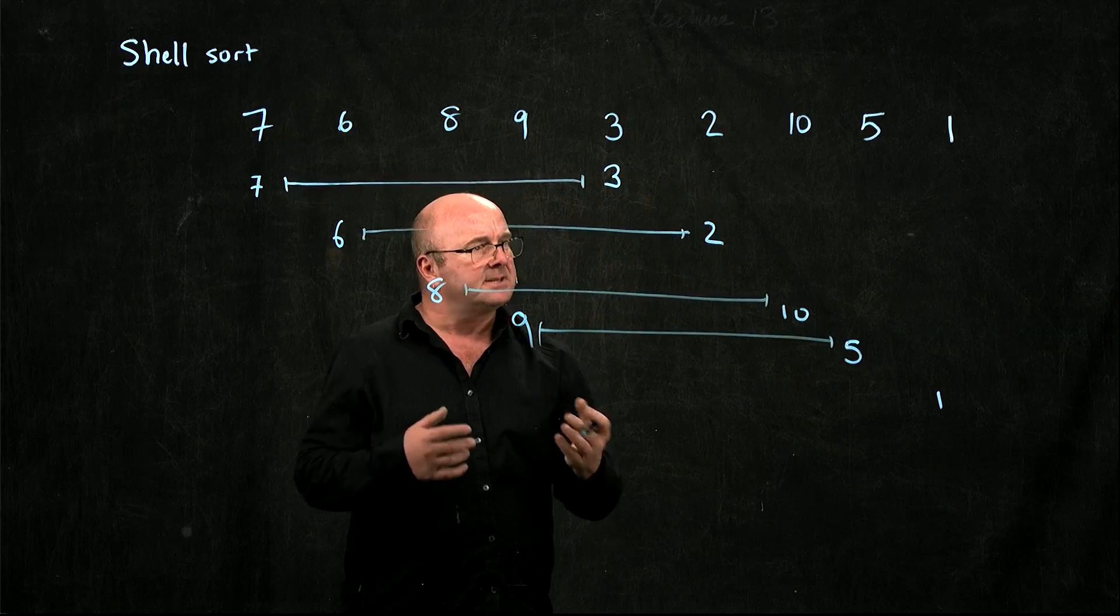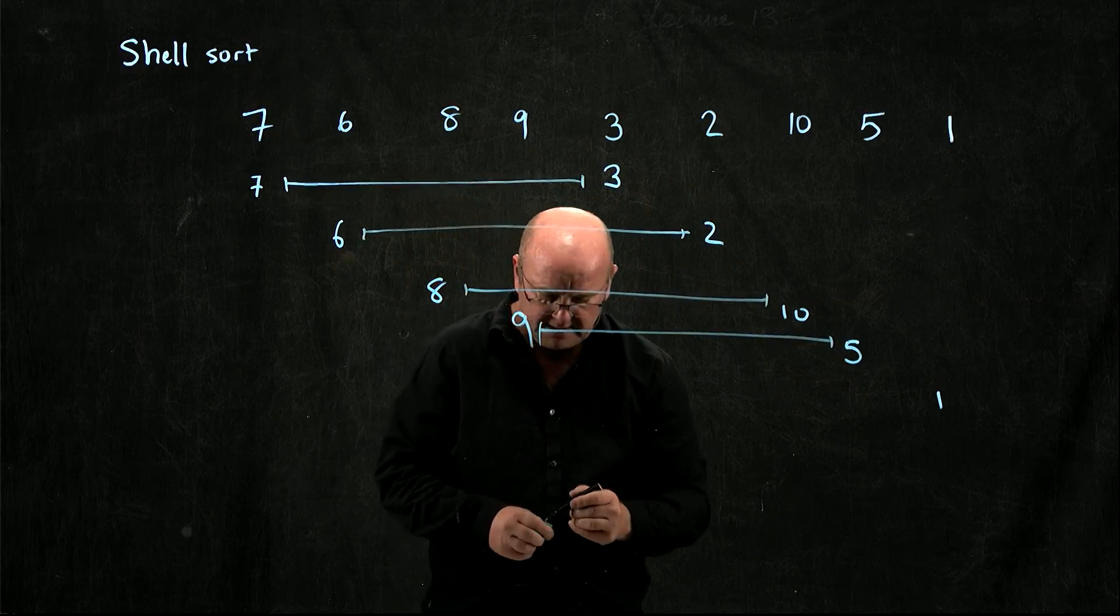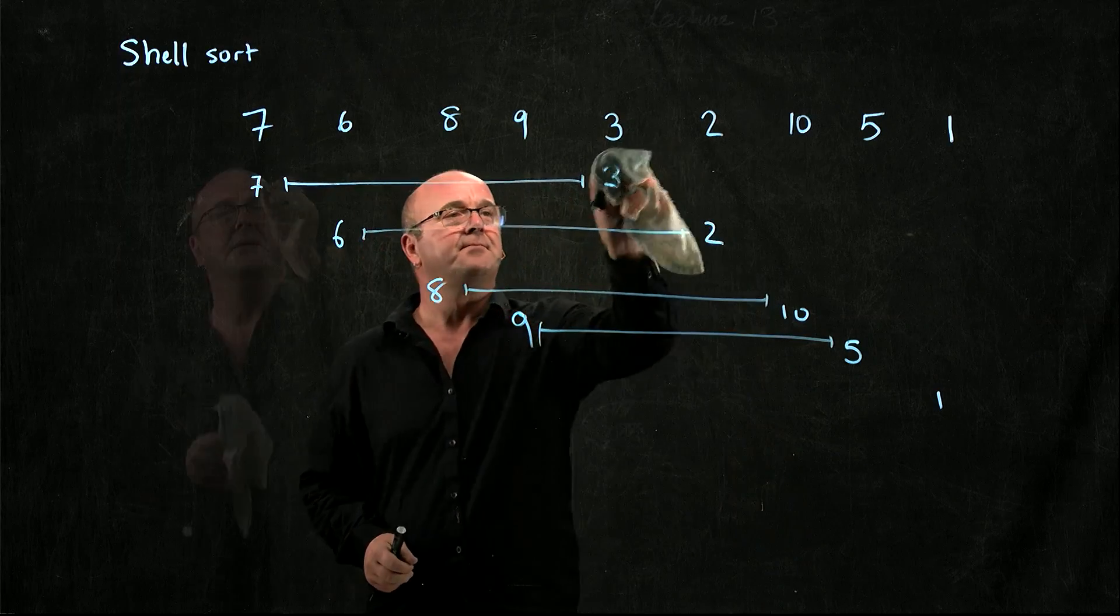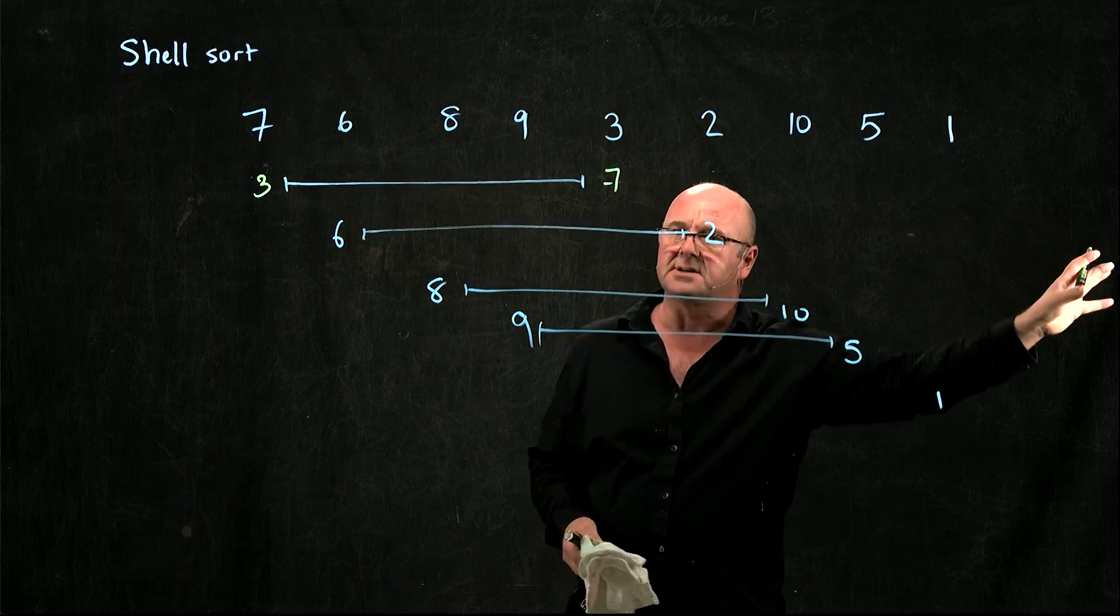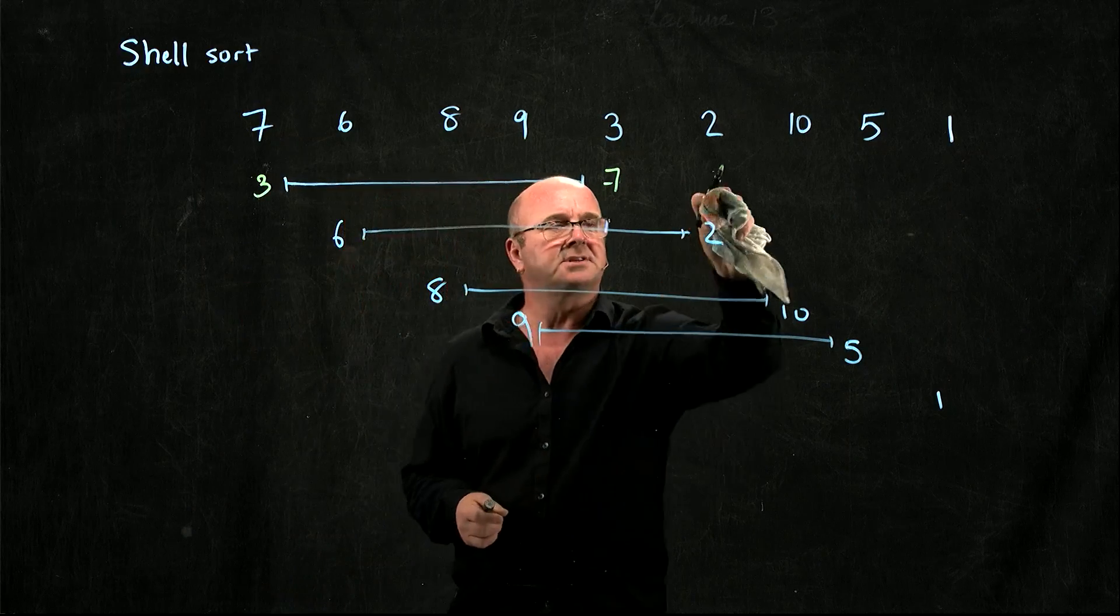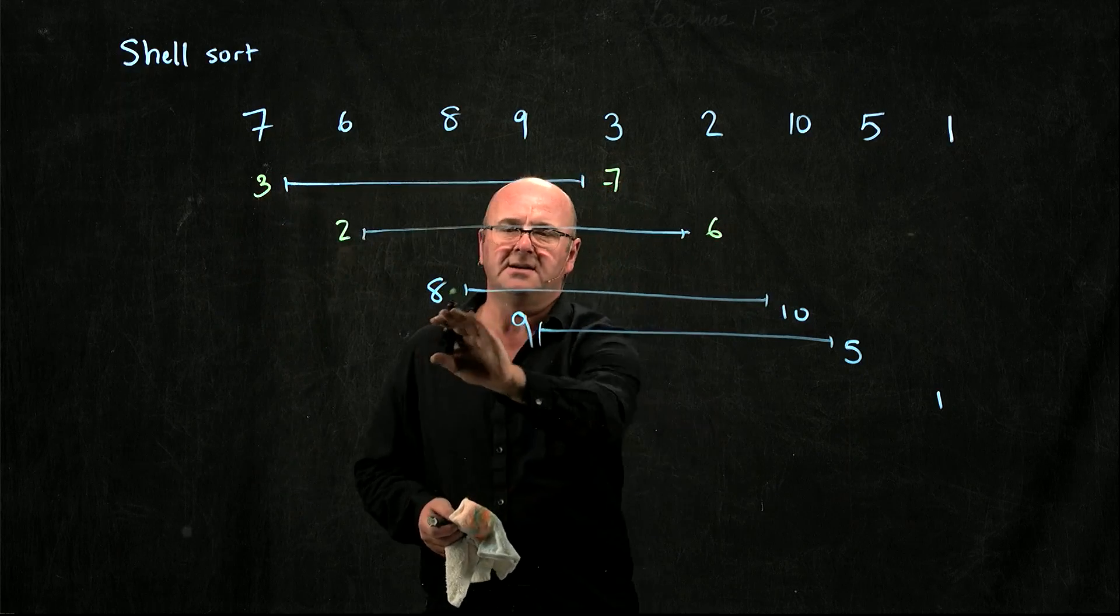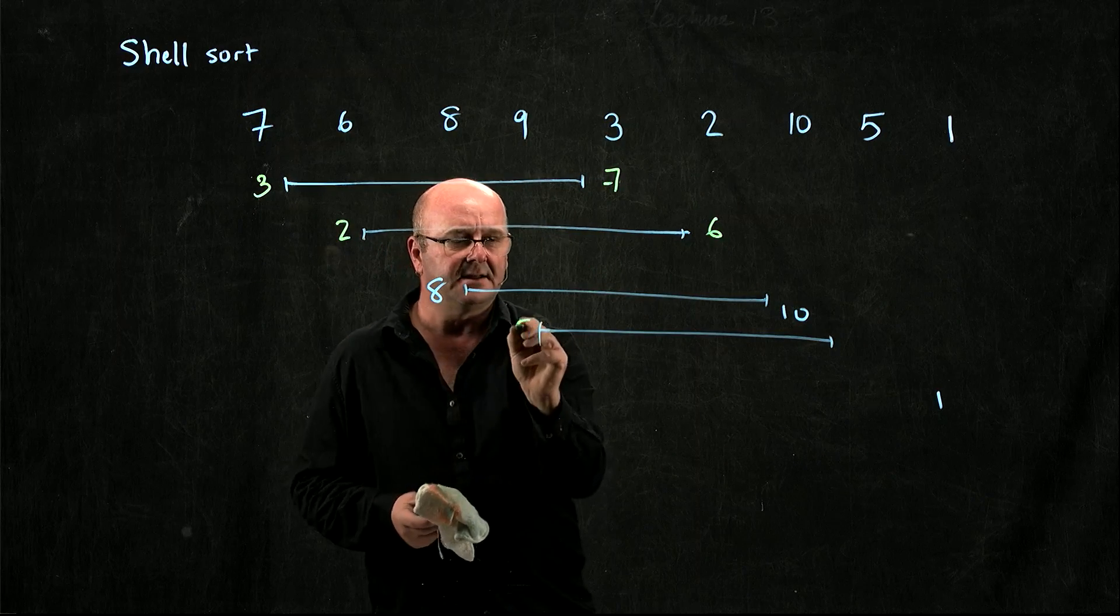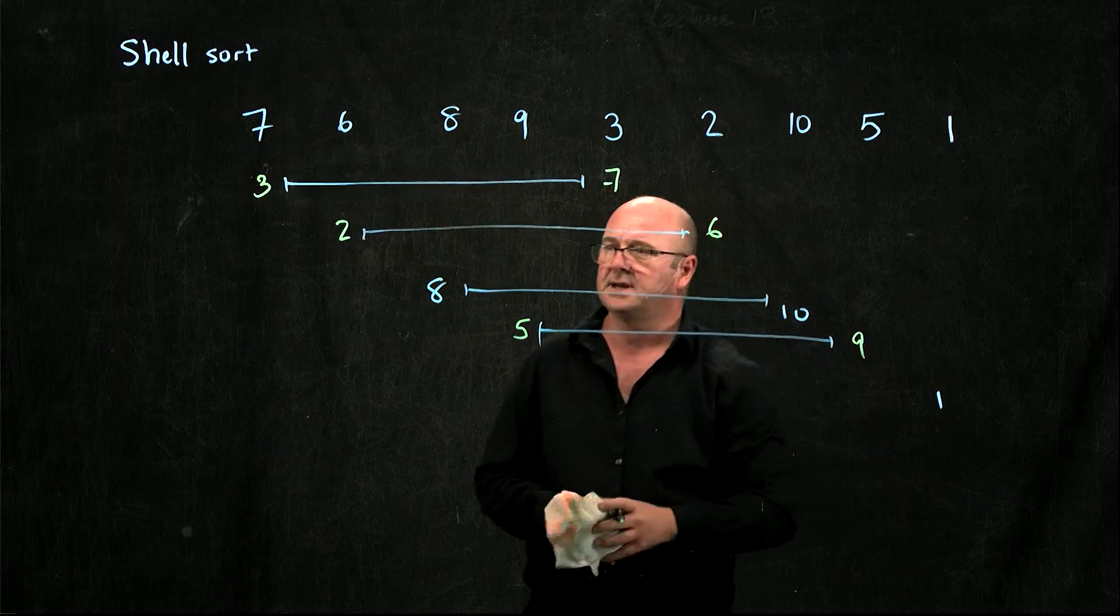Now what I'm going to do is I'm going to sort just those pairs. So in this case, I would swap the 3 and the 7. The 3 is a smaller number and it's over on the wrong end, so we try to move it closer. I'm going to swap the 2 and the 6, leave the 8 and 10 where they are, swap the 5 and the 9, and leave the 1 where it is.